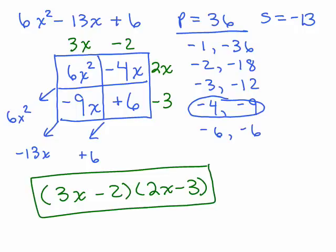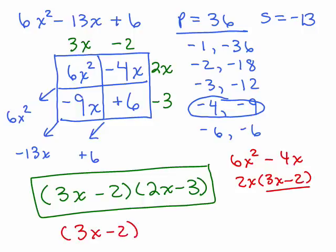Okay, let's contrast that with a shortcut method. You don't have a box, but you do get the negative 4 and the negative 9. So you take the first term, 6x² with one of these, negative 4 and negative 9. So let's take the negative 4x, take out the greatest common factor. And now you know that's one of the factors. So you would say, okay, I know one of the factors is 3x - 2.